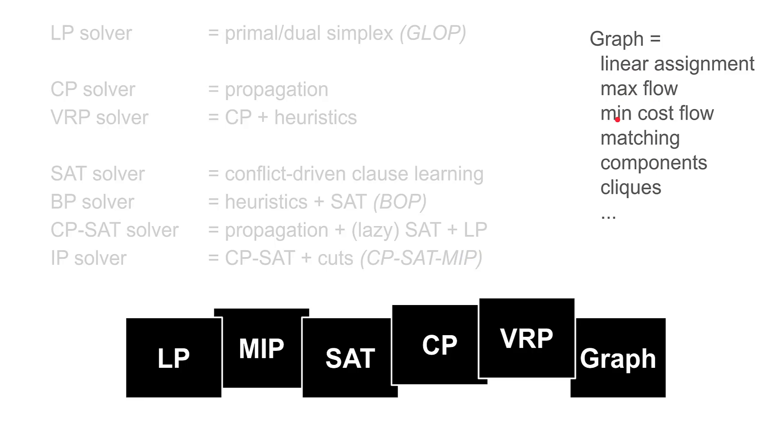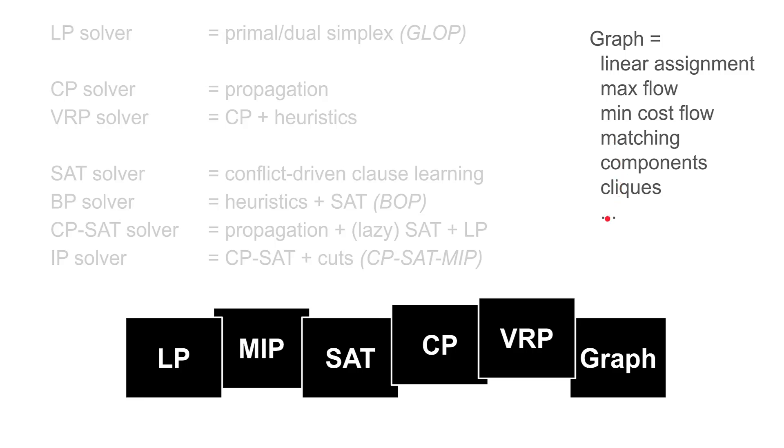CP-SAT can be used as a generic integer programming solver, and this is just CP-SAT plus cuts that we have implemented, and we sometimes call it CP-SAT MIP. Last but not least, we have graph algorithms: linear assignment, max flow, min cost flow, matching algorithms, components, strongly connected components, cliques, and many others. All together, we have in-house Google-made solvers for linear programming, constraint programming with specialized application to VRP, and SAT-based techniques to enable generic constraint programming solver and dedicated graph algorithms. That's a very rich set of different algorithms, and I think this is likely the richest combinatorial optimization library you can find.